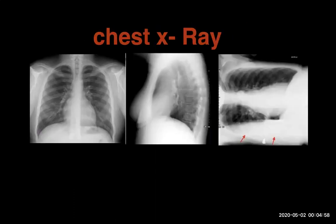For the chest X-ray, we commonly use a frontal radiograph — either PA view, which is commonly used, or AP view. In some cases, we use a lateral X-ray for localization of lesions and to sometimes exclude any artifacts which can be seen on the frontal radiograph or in the pocket of the patients.